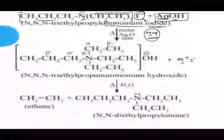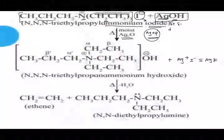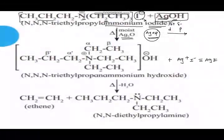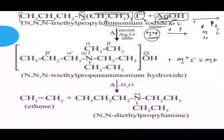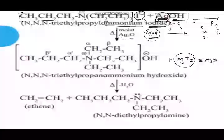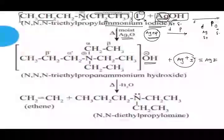The I⁻ reacts with Ag⁺ to form AgI as a byproduct. Ag is in the d-block and oxygen is in the p-block; electronegativity increases left to right, so Ag carries a positive charge and oxygen carries a negative charge. The positive and negative parts exchange: I⁻ reacts with Ag⁺ giving AgI as byproduct, and the N⁺ part reacts with OH⁻. The product is N,N,N-triethylpropane ammonium hydroxide — nitrogen has a positive charge, therefore ammonium, and this is the hydroxide. The exchange of plus and minus parts is now complete.